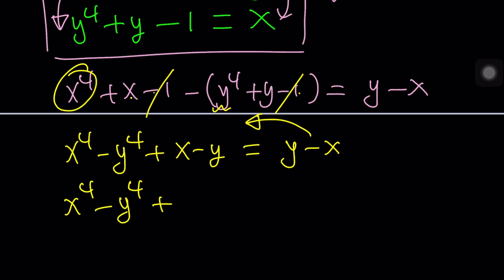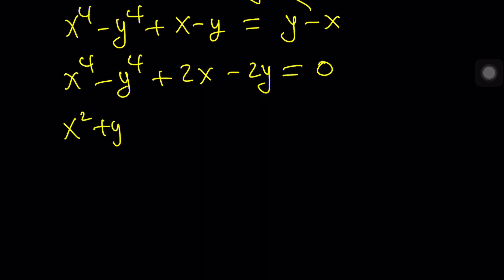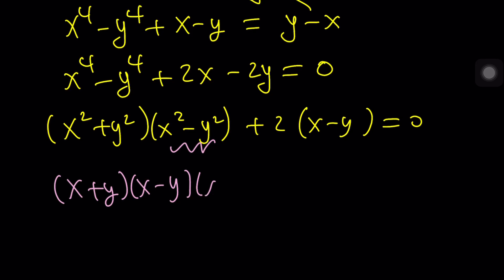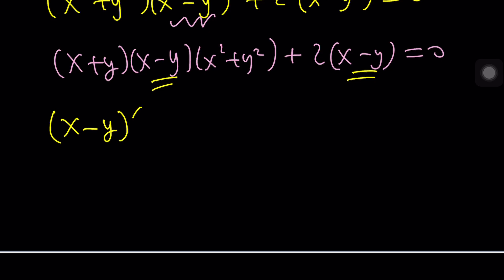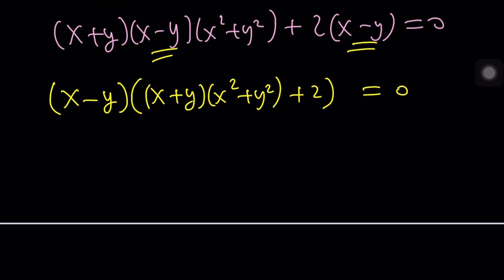Put everything on the same side now. x plus x, 2x minus 2y equals zero. Now, this is factorable into difference of two squares, one of which is a difference of two squares. So we're going to factor again one more time. Keep factoring until you get to the end. This will become x plus y and then x minus y and then x squared plus y squared. And the second term is two times x minus y. What is a common factor? x minus y is a common factor. Take it out. From here, we get something super duper awesome, which is x minus y equals zero or y equals x.